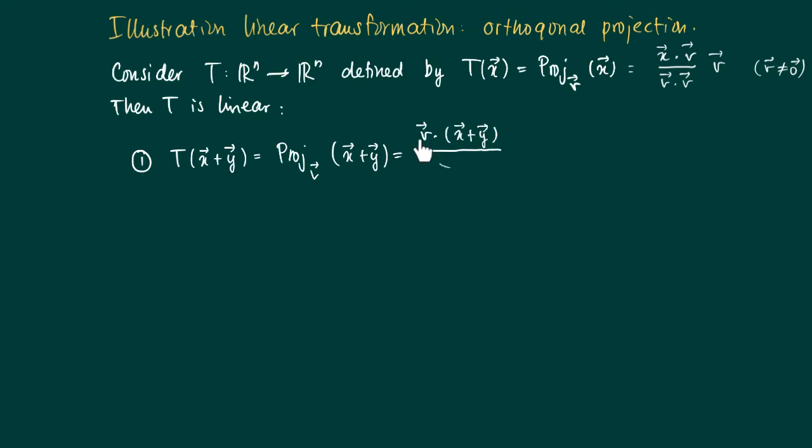Which is the dot product of V times X plus Y divided by the dot product of V with itself times V. The dot product satisfies a distribution property in the sense that the dot product of V with the sum of vectors is the same as the sum of the dot products.